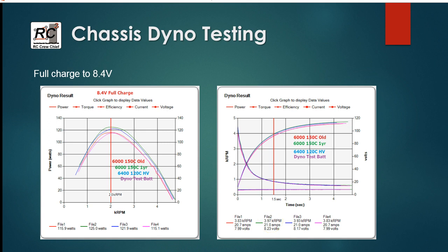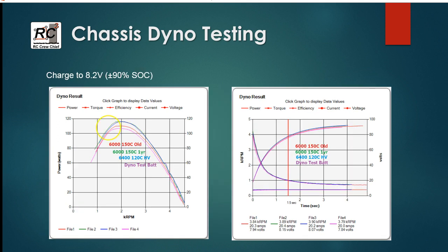Just remembering here that we're seeing a peak power of around 125 watts with the fully charged pack. So now let's look at what happens when we're only charged to 8.2. Now at 8.2 we're down under 120. I didn't actually click on the line to get the data summary, unfortunately, but we can see here that we're only getting basically the two packs, the 6400 high voltage pack and my one-year-old pack, are developing about the same power, around 115 watts. And similarly the other guys drop off with my test battery being the worst performer.